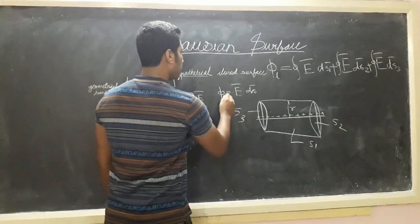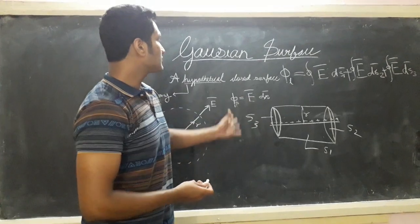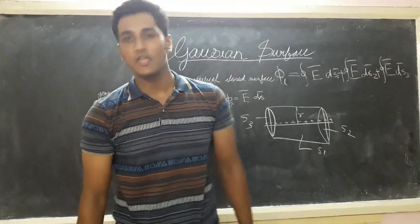And this is the flux of our point charge. So in this way we can find electric flux by using the concept of Gaussian surface. Thank you.